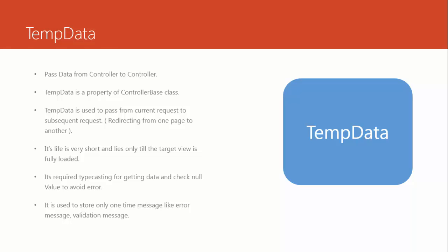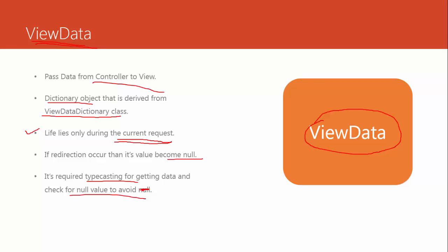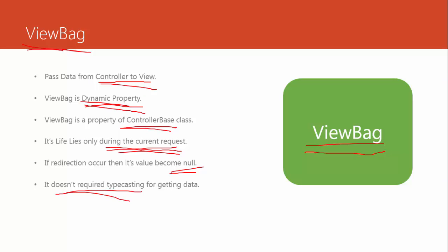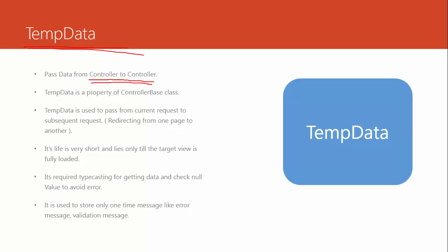Now let's understand TempData. TempData is different from ViewBag and ViewData. It passes data from controller to controller. ViewData and ViewBag are used to transfer data from controller to view, but TempData is used to pass data from controller to controller. TempData is a property of the ControllerBase class, and it is used to pass data from the current request to a subsequent request — that is, redirecting from one page to another.